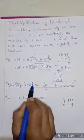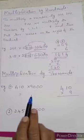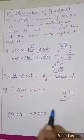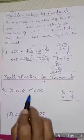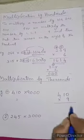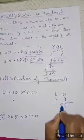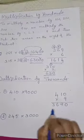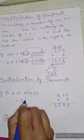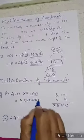Next heading: multiplication by 1000. When a number is multiplied by 1000, we add 3 zeros to the right. First example: 410 multiplied by 9,000. First multiply by 9 — 9 into 0 is 0, 9 into 1 is 9, 9 into 4 is 36. You got 3,690. Then write 3 zeros at the right side of this number.